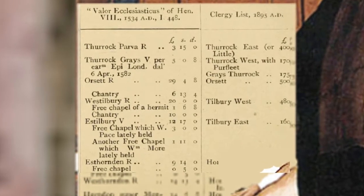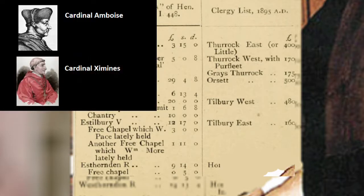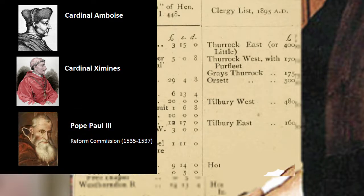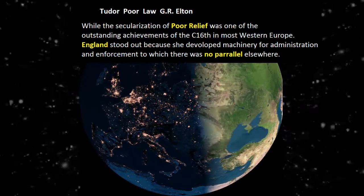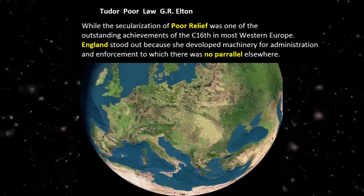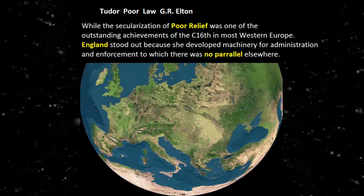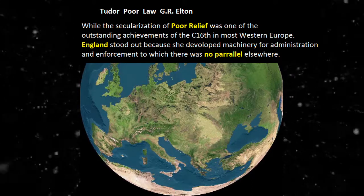Monastic orders had become wealthy and corrupt. In France they were transformed by Cardinal Ambois, in Spain by Cardinal Jimenez. The Pope's commission recommended their abolition, and in England they were abolished. Cromwell's method was to compile statistics — the Valor Ecclesiasticus — pass statutes and establish institutions, including poor relief and the poor law.